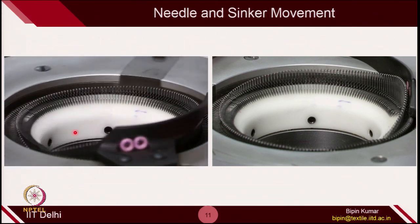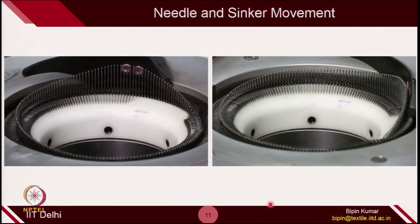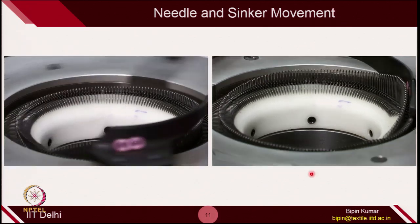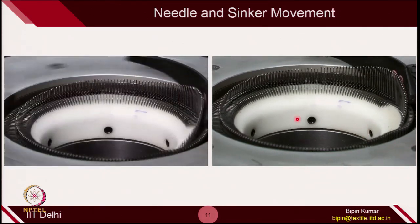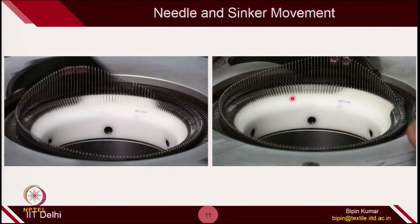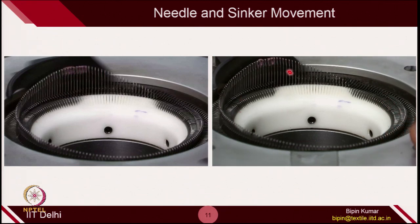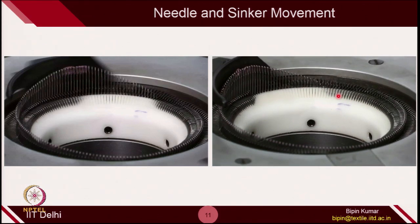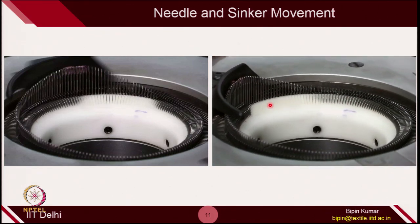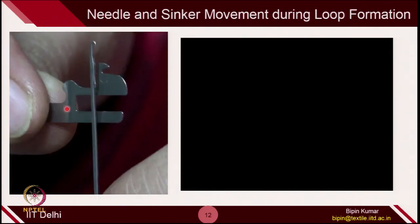In the slow-motion video, you can see the needle going up and down. There is some object going inside — that is the sinker part — while the needle is going up and down. When the needle is in the downward position and then moves to the upward position, you can see the sinker is coming out. When all sinkers are inside, the needle is in a certain position. The needle and sinker interact to help during loop formation.